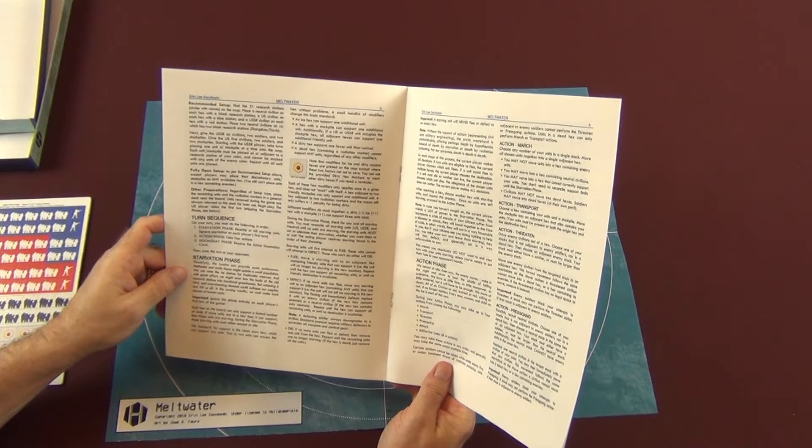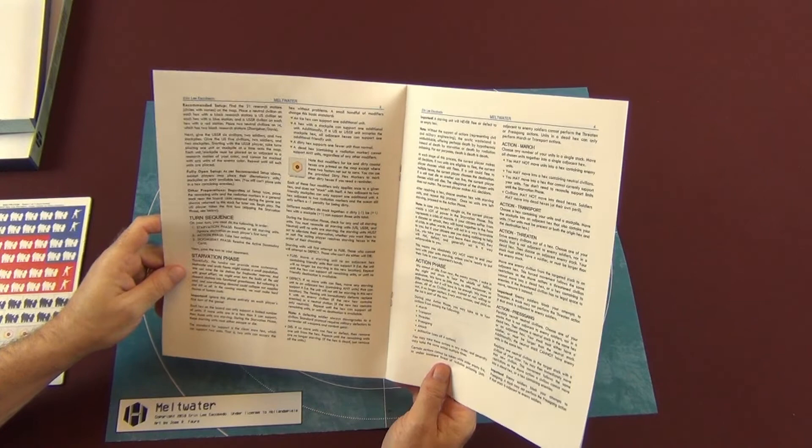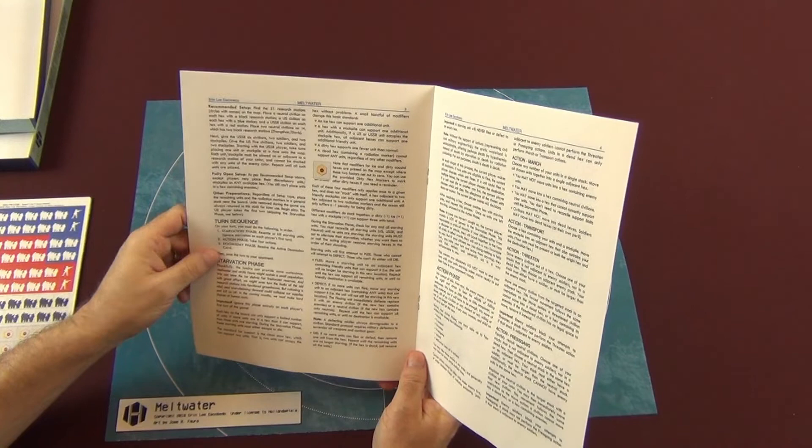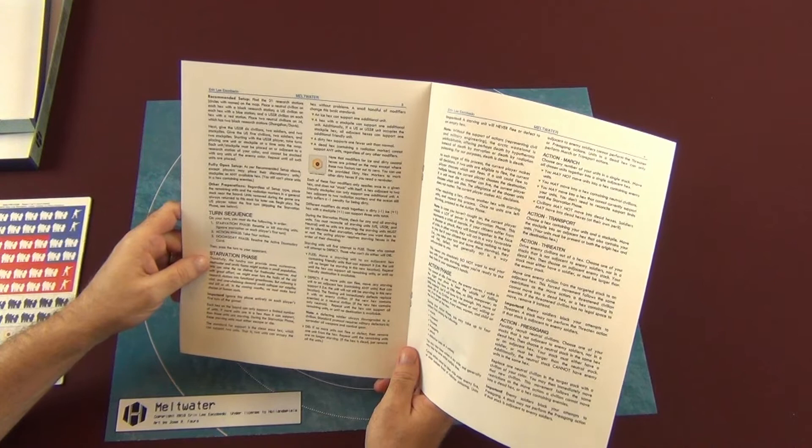Then you have your turn sequence. You have your starvation phase, resettle or kill starving units, ignore starvation on your first turn. And then you have your action phase where you take four actions. Doomsday phase resolves the active doomsday card, and then you continue on to the next turn.